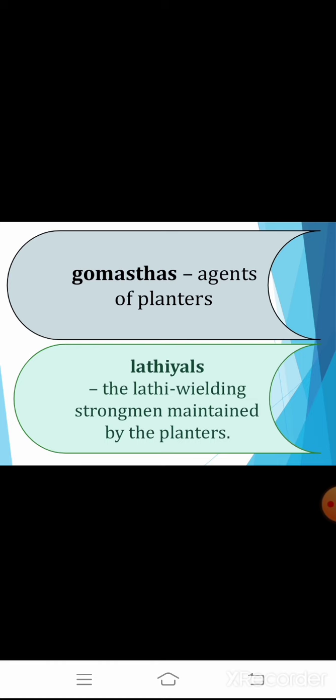Why did the indigo peasants decide they would no longer remain silent? The indigo system was intensely oppressive, but those who are oppressed do not always rise up in rebellion. In 1859, the indigo Riyots felt they had the support of local zamindars and village headmen against the planters. In many villages, headmen who had been forced to sign indigo contracts mobilized indigo peasants and fought pitched battles with the latiyals. Zamindars went around villages urging Riyots to resist the planters, as they were unhappy with the increasing power of the planters and angry at being forced to give them land on long leases.